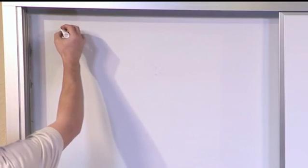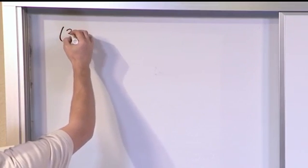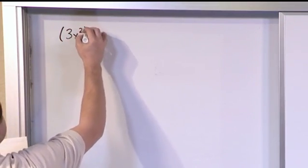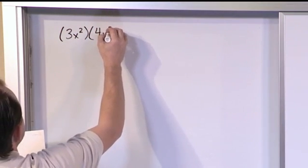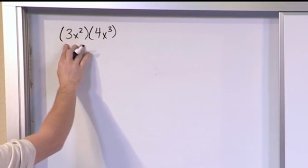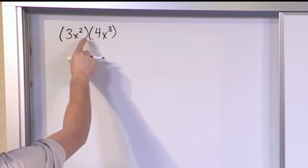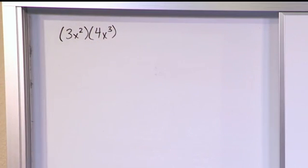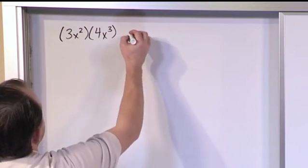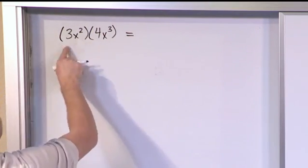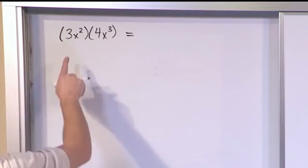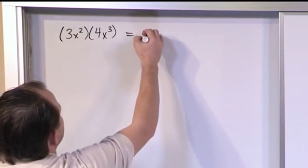So let's say you have some simple polynomials. 3x squared times 4x cubed. Now I'm saying this is a polynomial here multiplying by this polynomial here but of course these are each one term so they're very small little insignificant polynomials. But they're being multiplied together. So what do you do here? When you have things multiplied together like this, first thing you do is multiply the numbers. 3 times 4 is 12.